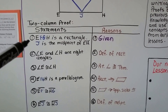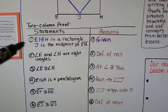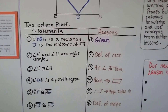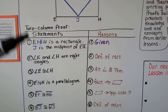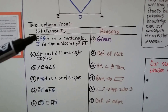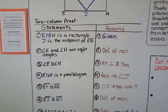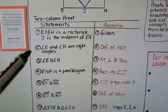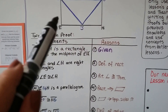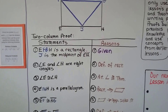Here's our two-column proof. Statement one: EFGH is a rectangle, and J is the midpoint of EH — that's the given. Be careful, because the given isn't always the first statement; it is most of the time, but every once in a while it won't be. Statement two: angle E and angle H are right angles. That's the definition of a rectangle.